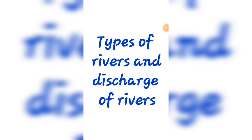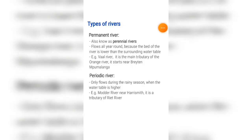Today's video will be about the types of rivers and the discharge of rivers — and happy World Water Day. There are four types of rivers. With each type of river, I'm going to give an example of a river in South Africa. You should know this example, but I'm also going to give some extra information about the river just for interest. You do not need to know this extra information for a test, but please just know the name of the river because you might be required to list it.